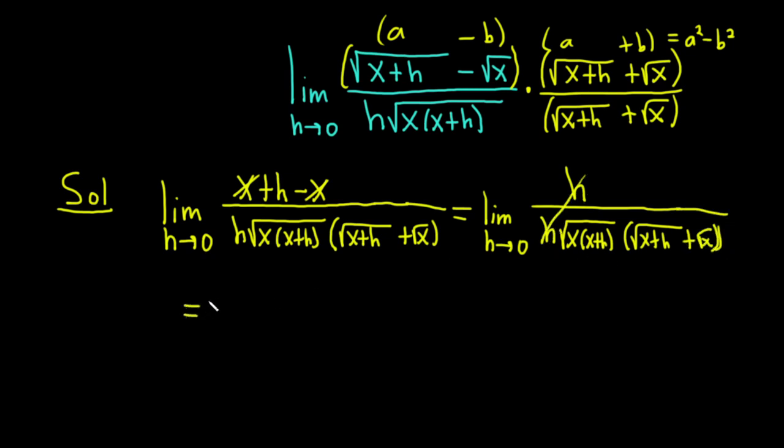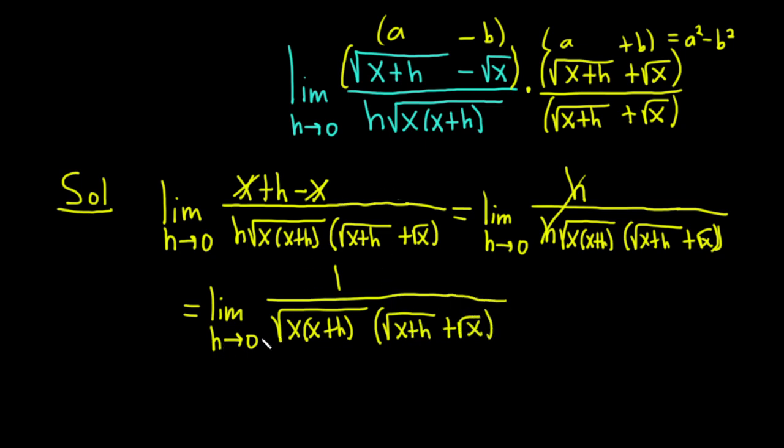So finally this is equal to the limit as h approaches 0, 1 over all of this stuff. So we have the square root of x parentheses x plus h, and parentheses square root of x plus h plus the square root of x. Finally, we're at the point where we can actually plug in 0 for h because there's no issues. We're not dividing by 0 or anything funny.